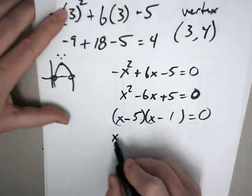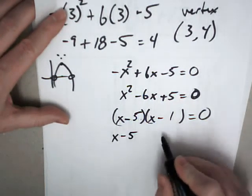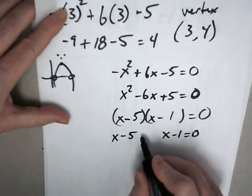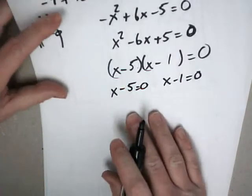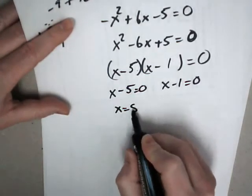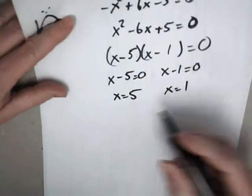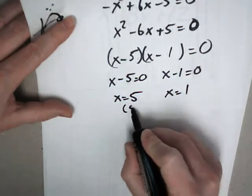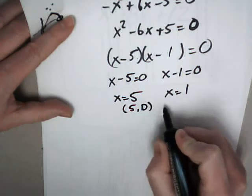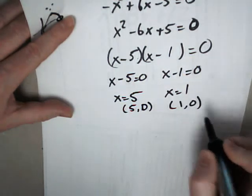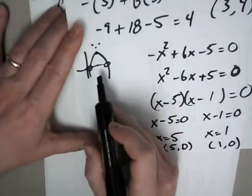So you set these guys equal to 0 individually. 0 product property. So x equals 5, x equals 1. So your intercepts are 5, 0 and 1, 0. That's pretty close to what I kind of graphed it as.